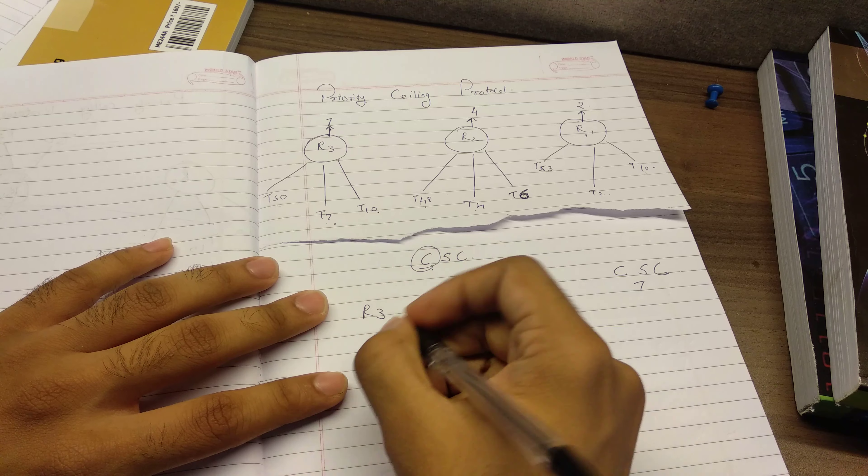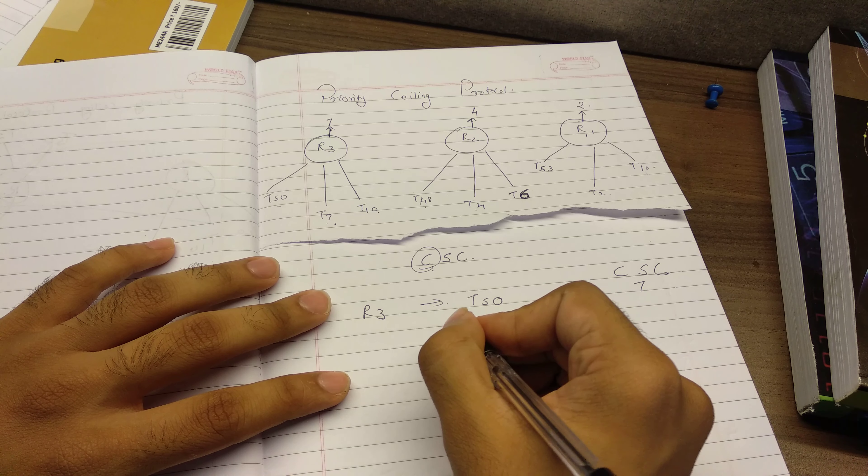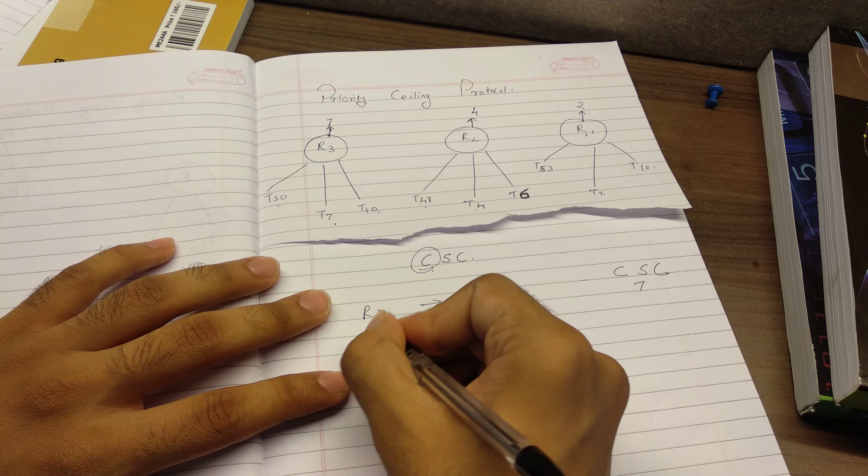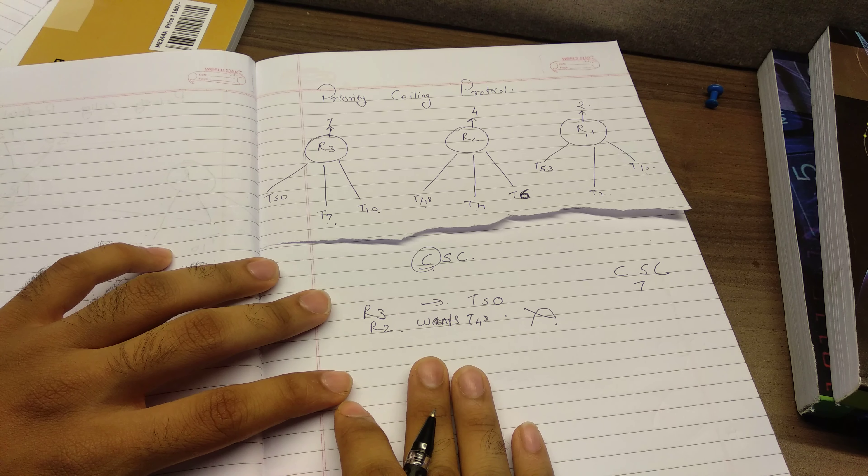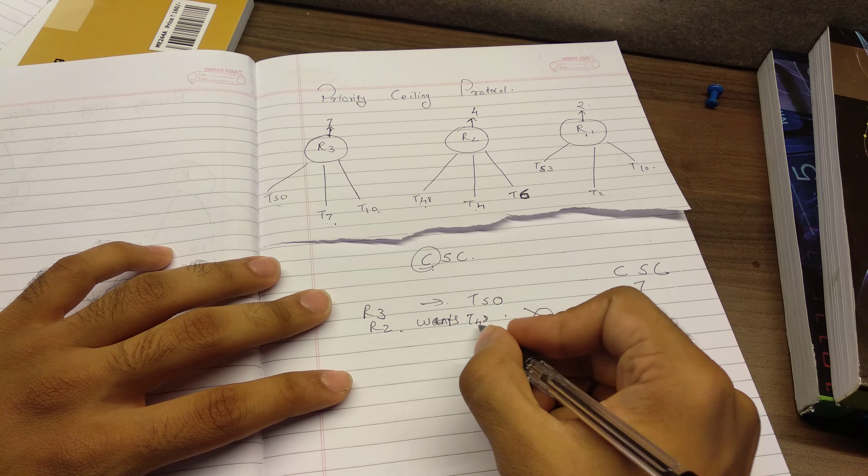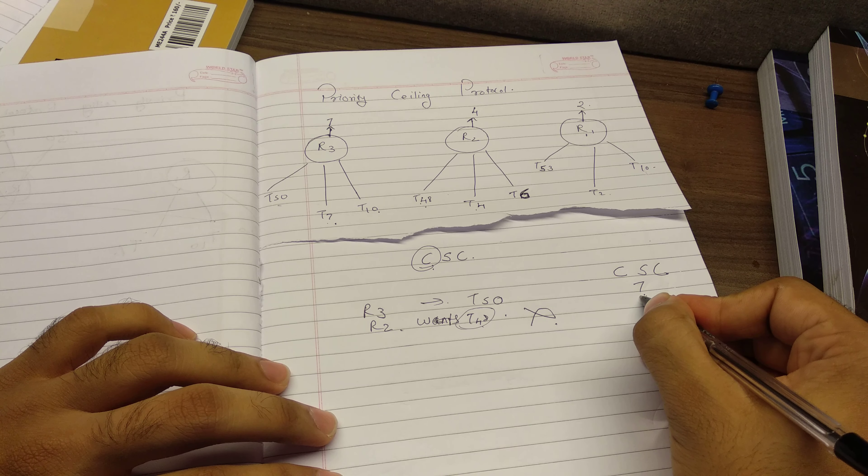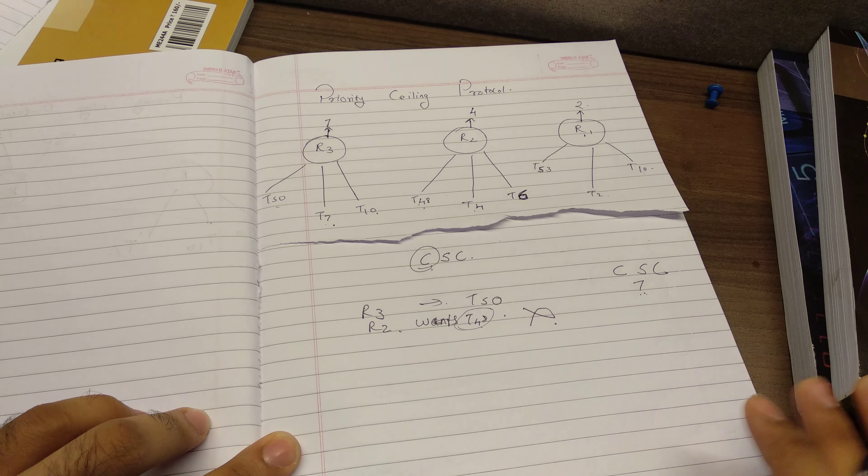Now, if T48 comes into picture and it wants R2, it will not be granted R2 because the priority of T48 is less than, is basically less than the current system ceiling. It's 48 priority and 7 is the current system ceiling. It will not be granted.